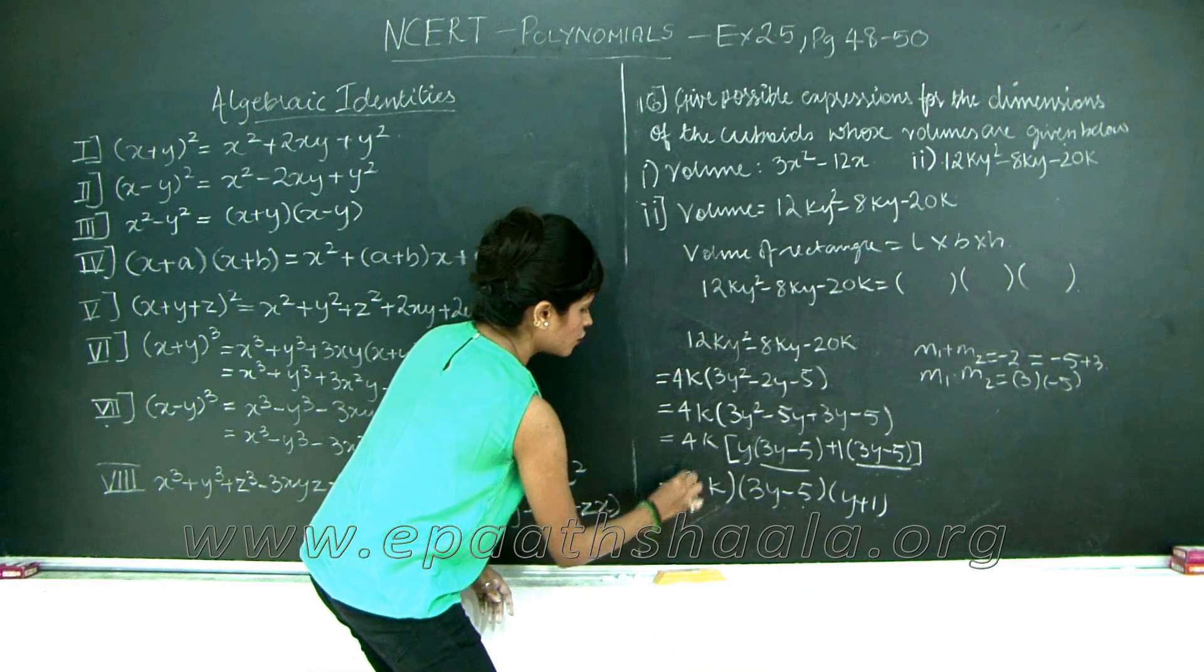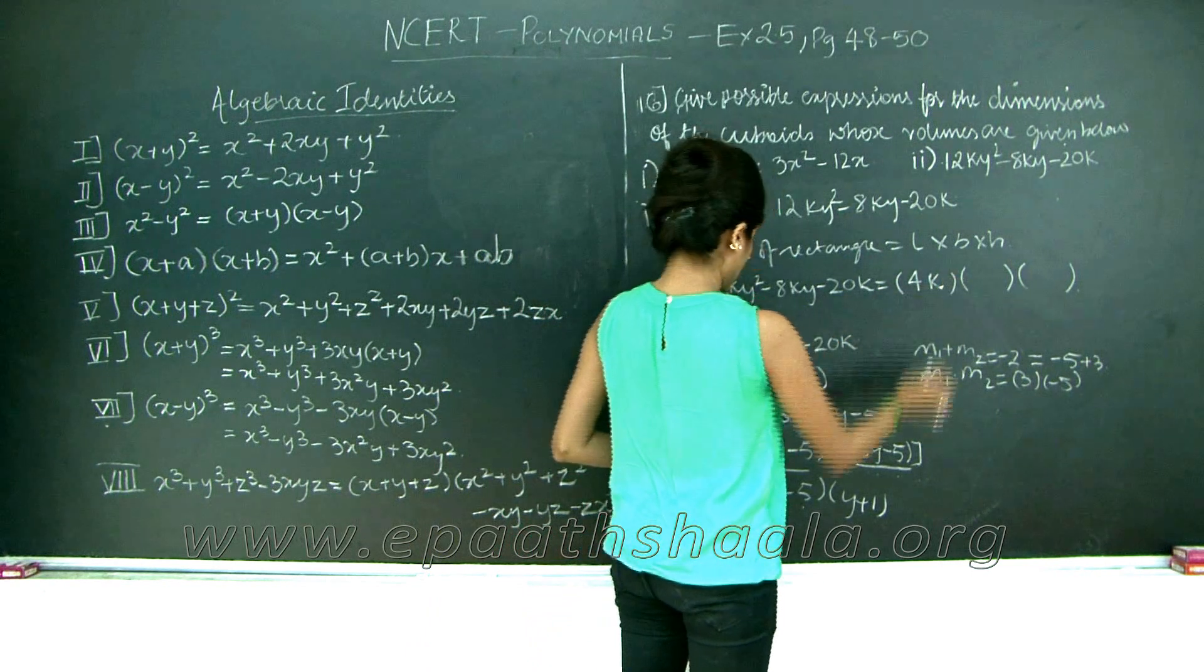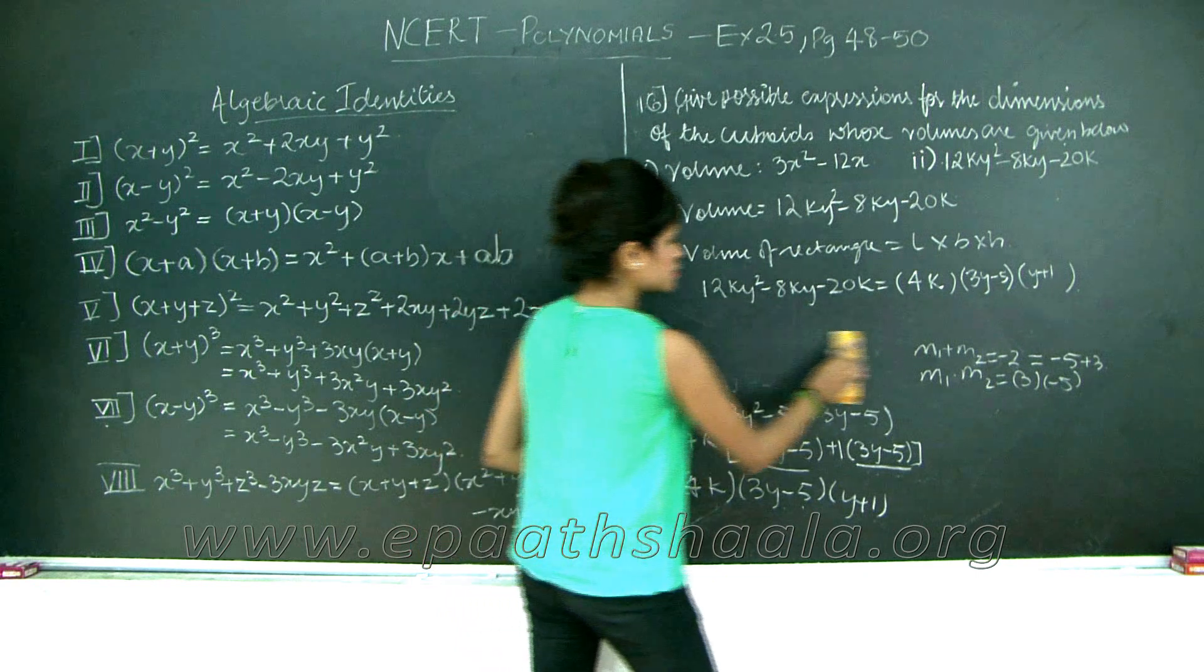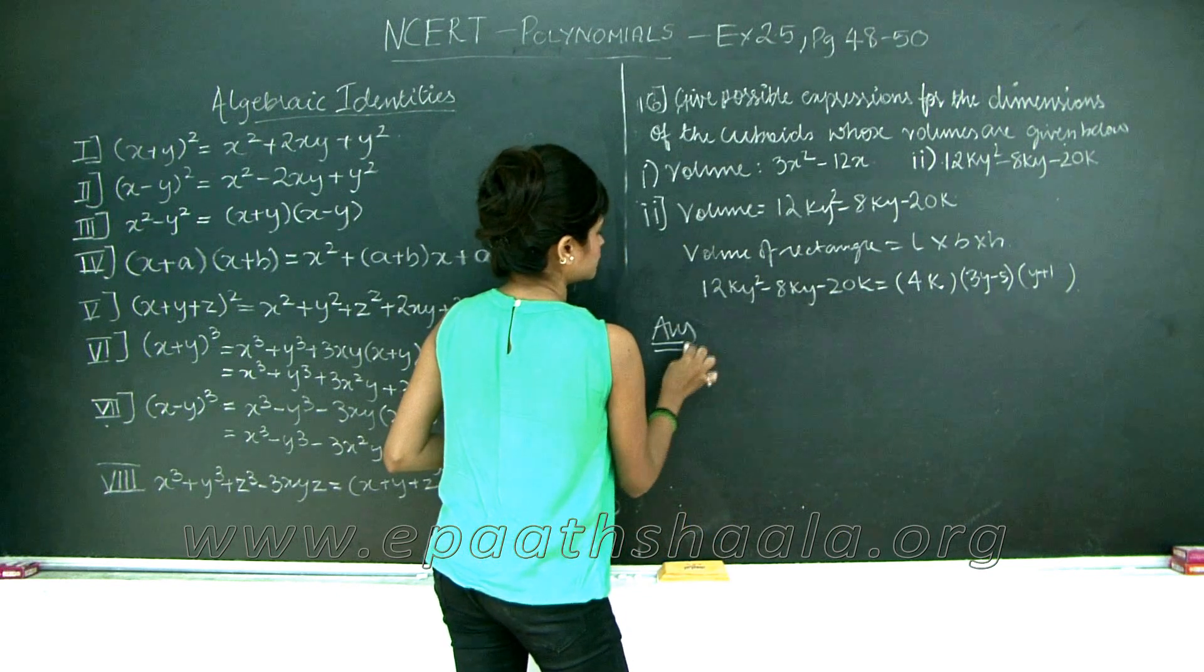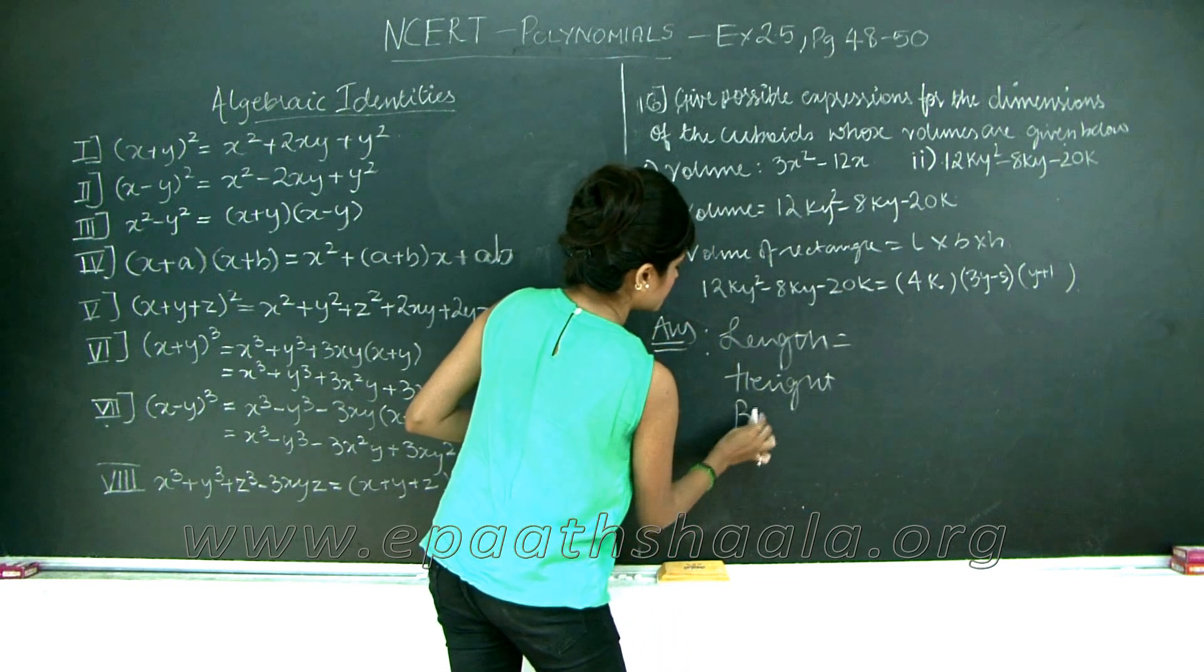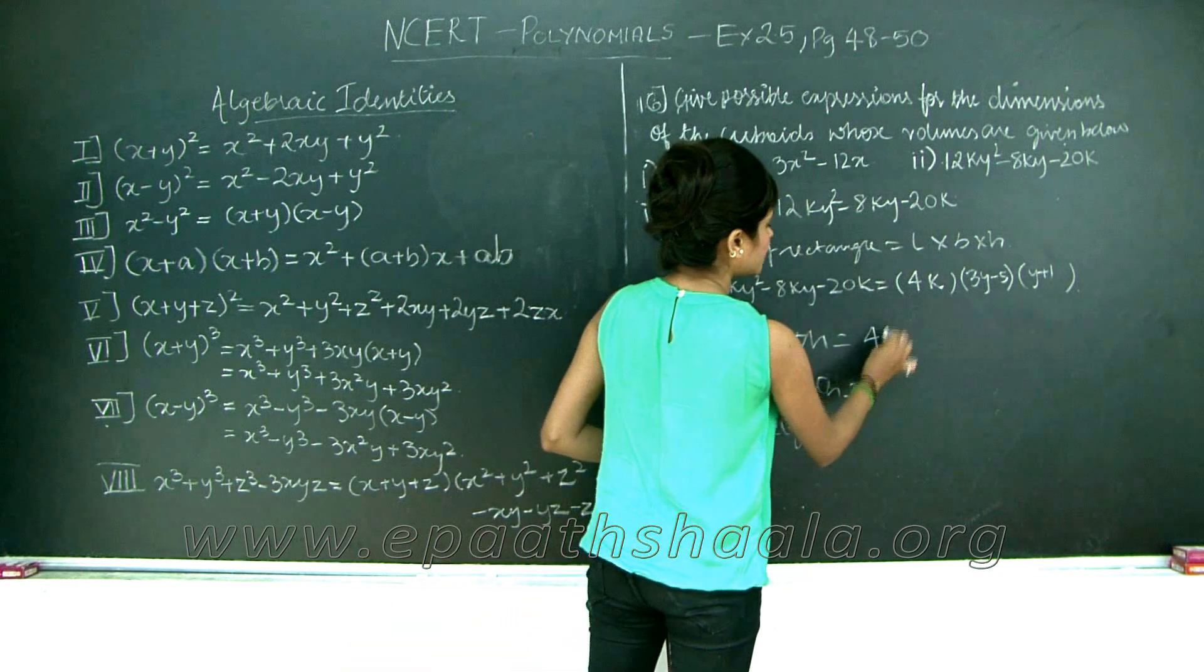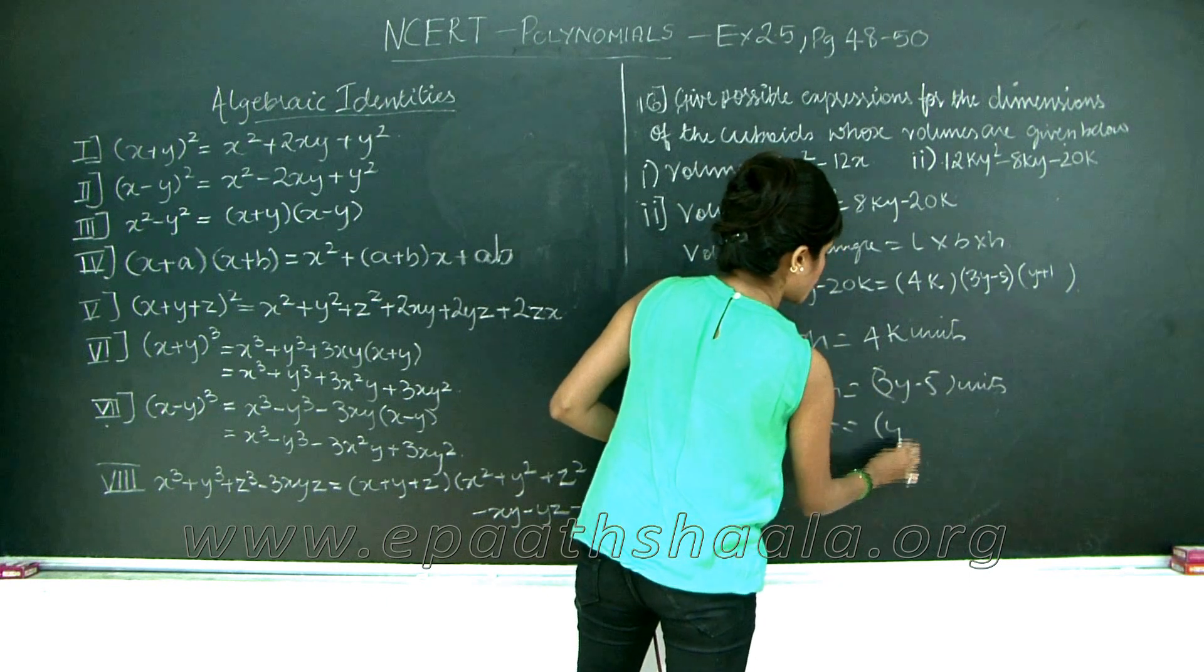You see that we have got product of three factors, so I can directly go ahead and substitute it over here. Let's say my length is 4k, my breadth is 3y minus 5, and height is y plus 1. This is just the working part. Answer: length is equal to 4k units, breadth is equal to 3y minus 5 units, and height is y plus 1 units.